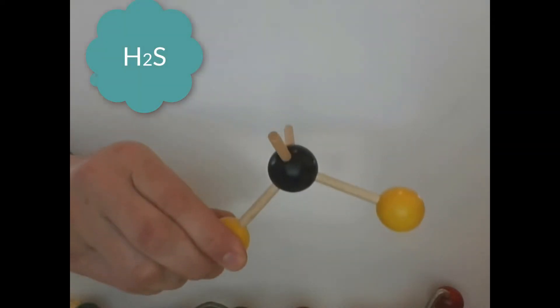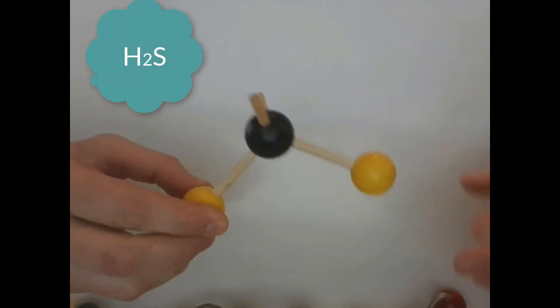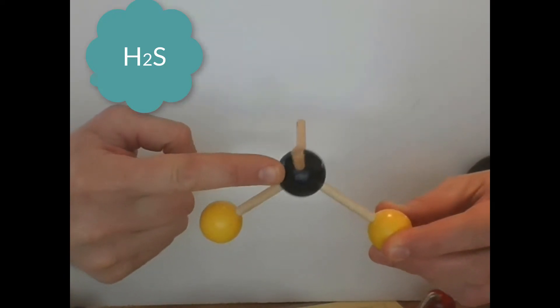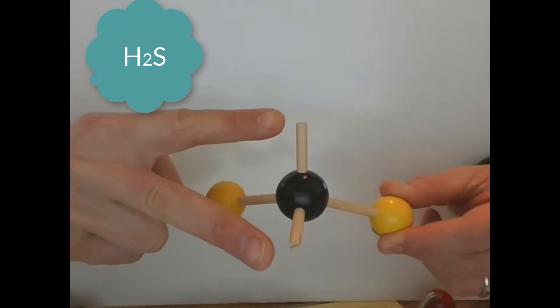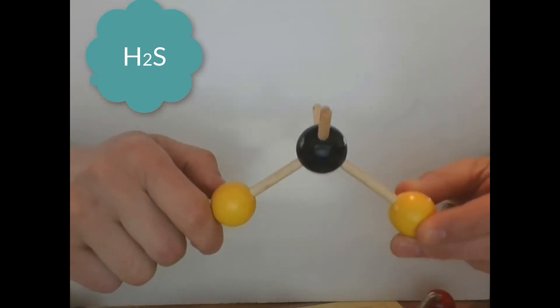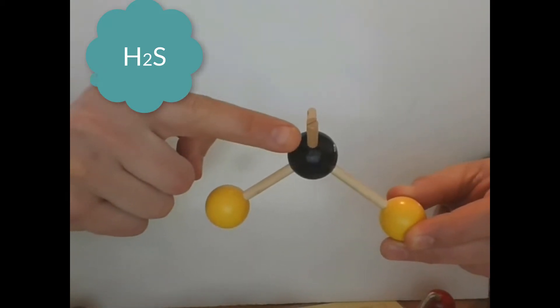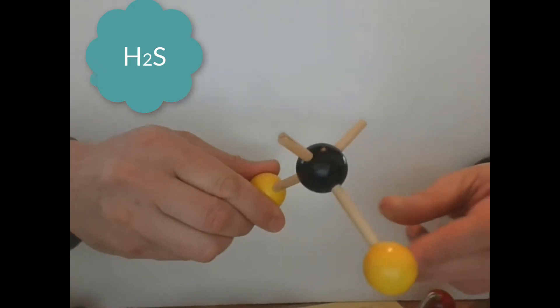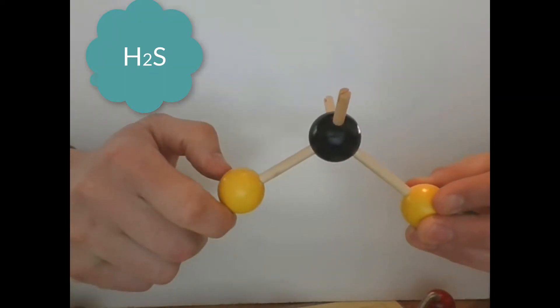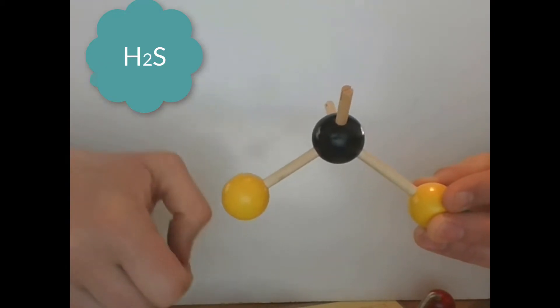All right, so this is the first molecule, it is H2S. Let's say we have a central atom with two lone pairs and two atoms bonded through single bonds. The short wooden sticks are lone pairs and long wooden sticks are single bonds. Yellow means hydrogen.